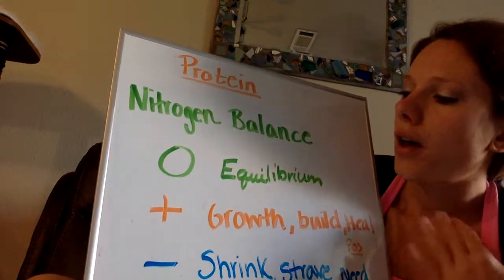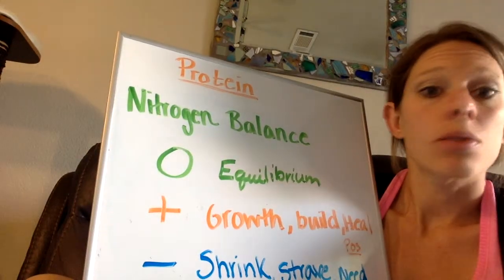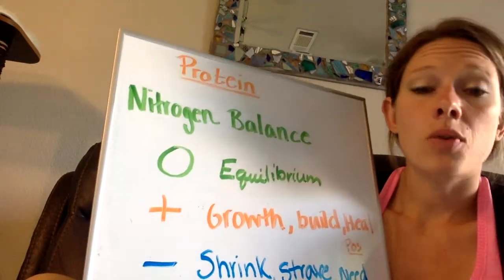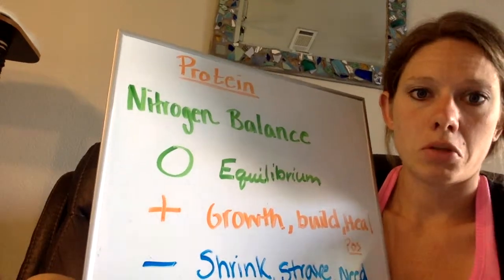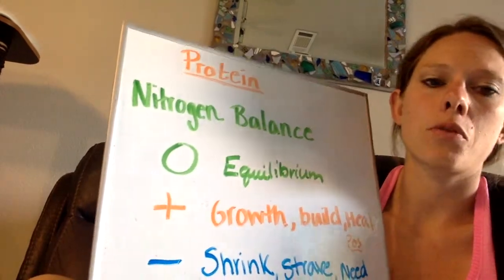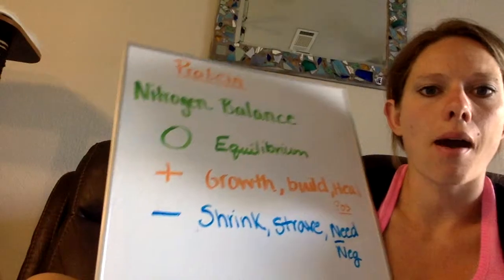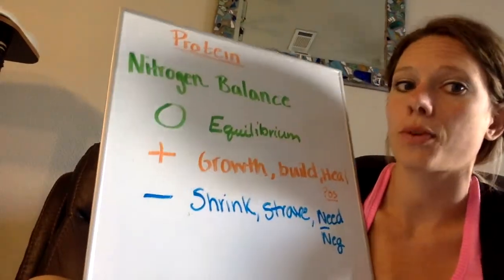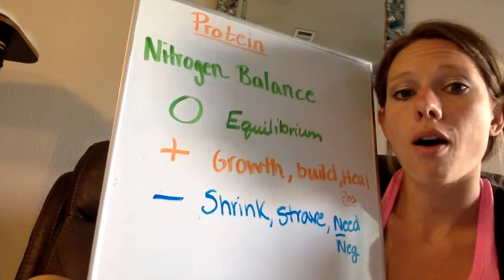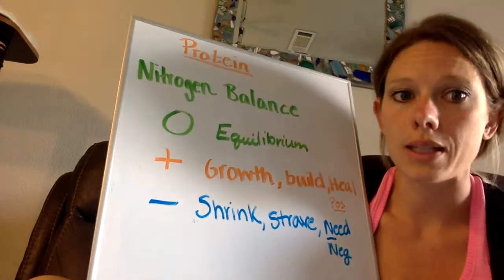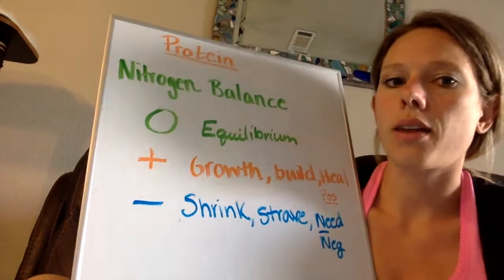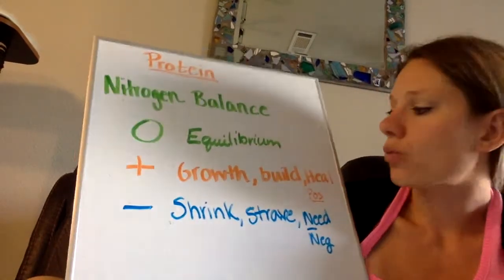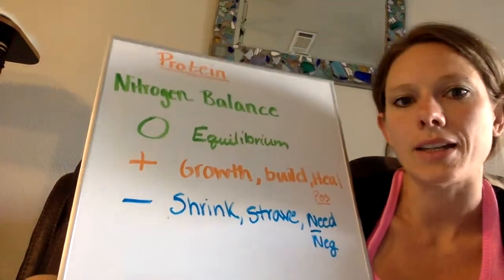So if we are in a normal state, nothing crazy is going on, we're in equilibrium, zero. So you probably won't see that type of person coming into the hospital. Usually we've got something going on if we're in the hospital. For example, a positive nitrogen balance is going to mean that the client or the patient is in a growth, building, or healing phase.